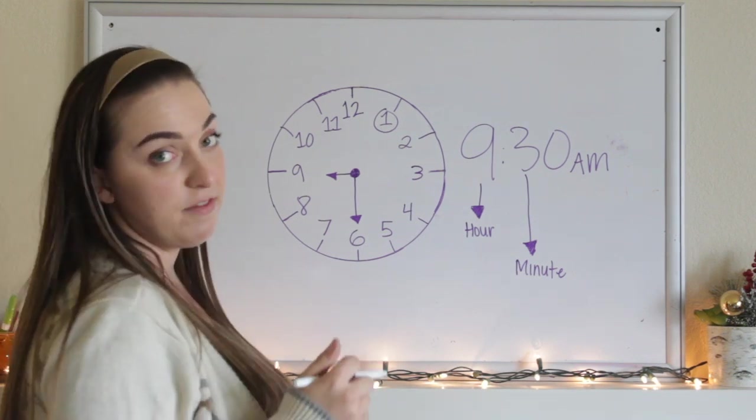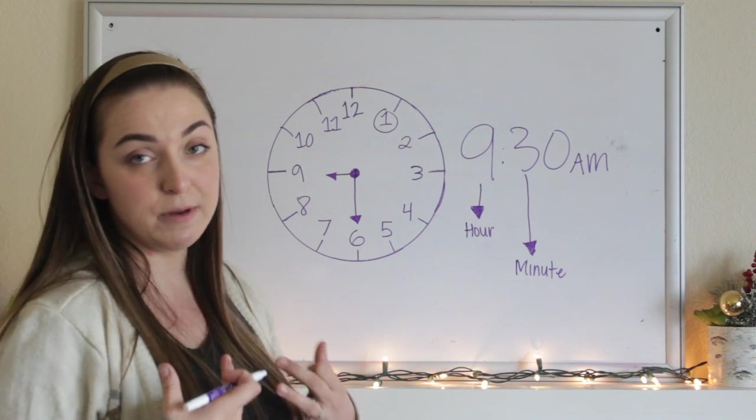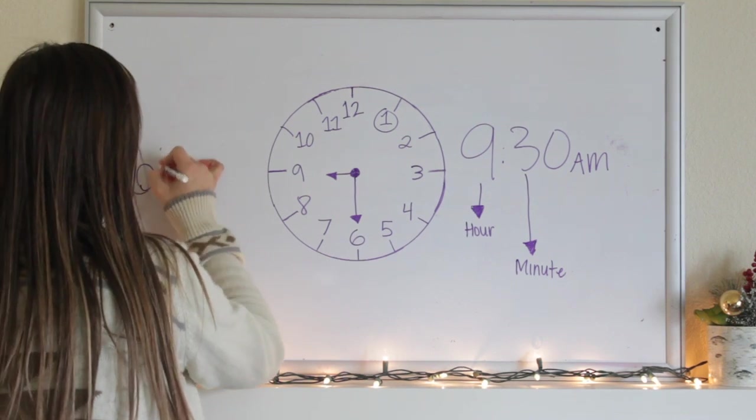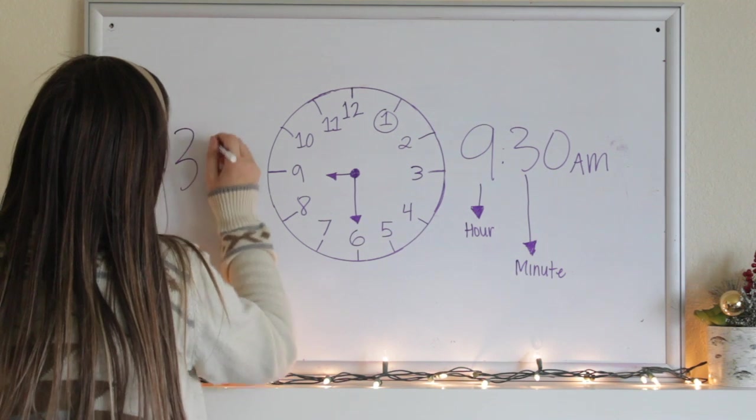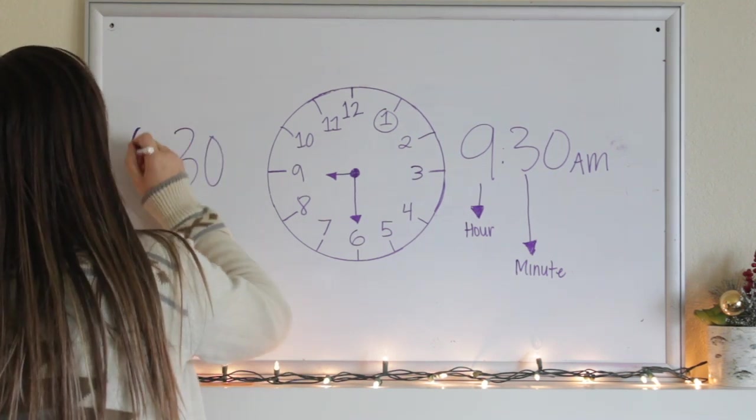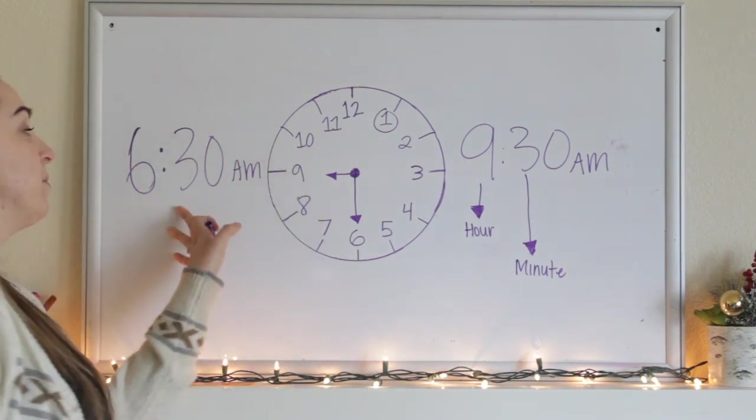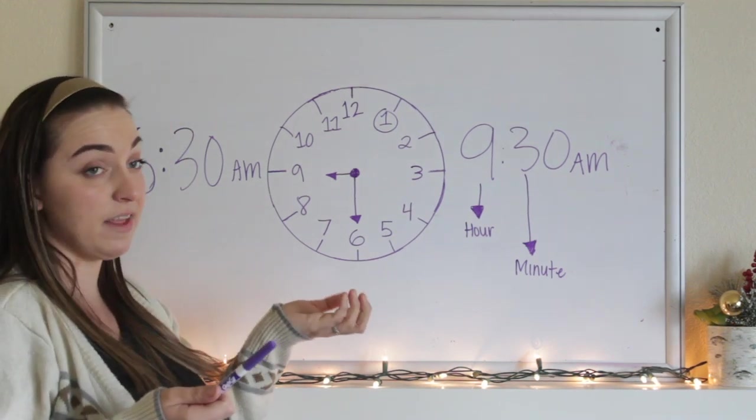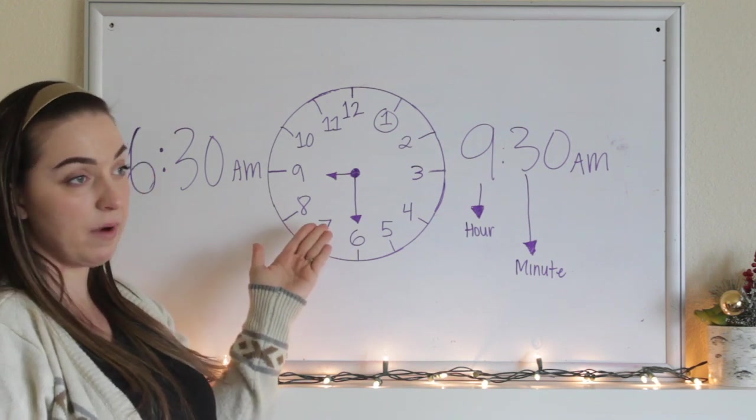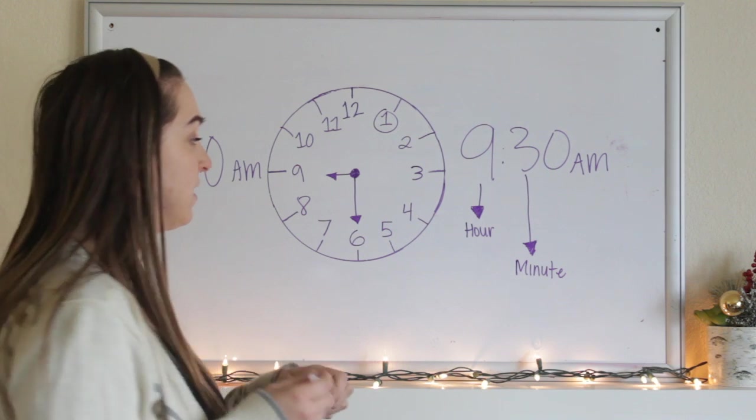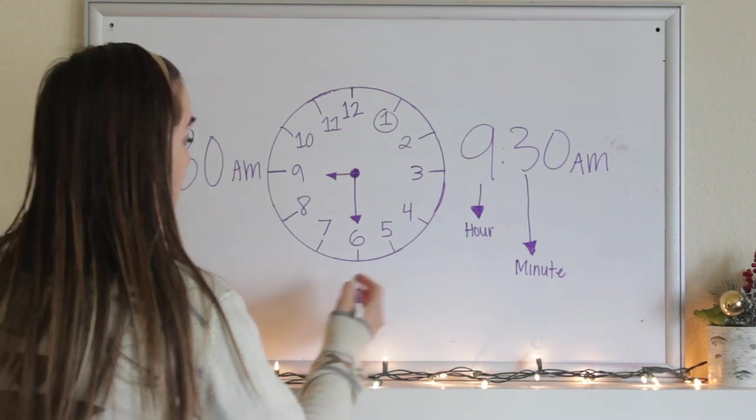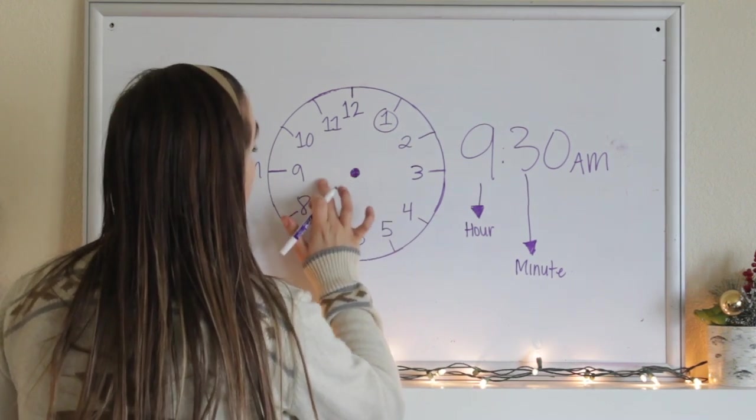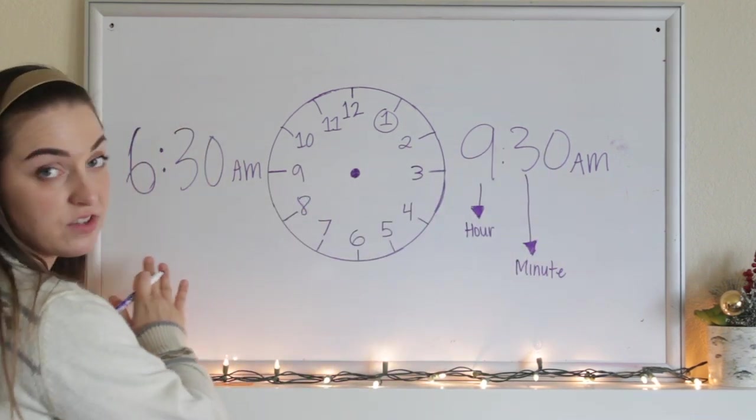Okay, now we're going to do a little bit of math. So I want to know how much time is in between 6:30 in the morning and 9:30 in the morning. So I'm going to write 6:30 over here and 9:30 over here. And I need to figure out how I'm going to find this time. So I have 9:30 written right here already. Let's go ahead and change our hands actually. So we already know that we're trying to get to 9:30, but let's start at 6:30. I think that'll help us out.